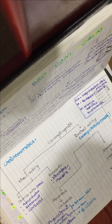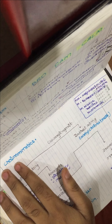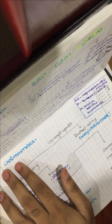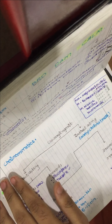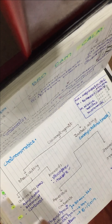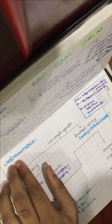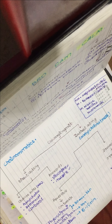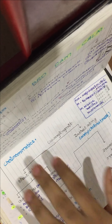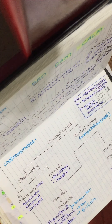This is the second part of ANS drugs. We're going to do the cholinomimetic drugs. Cholinomimetic refers to those drugs which mimic the action of acetylcholine — 'mimetic' means mimicry.